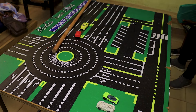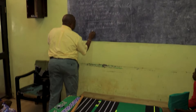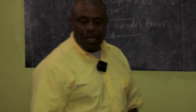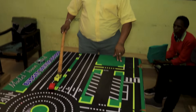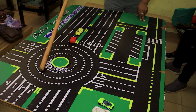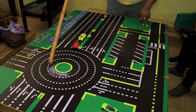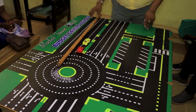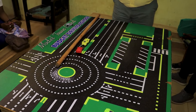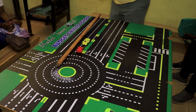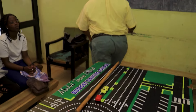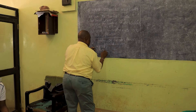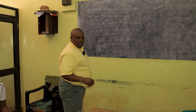First of all, anything that is in black is called roads — everything we see in that color is called roads. Number two, we are able to see the roundabout. A roundabout is a form of junction where vehicles move round to get or connect to their appropriate lanes.